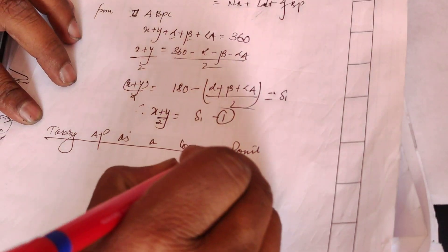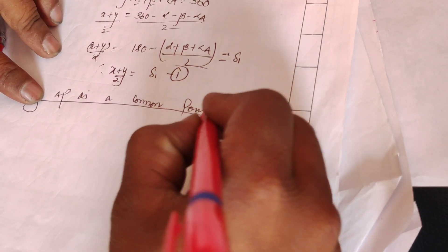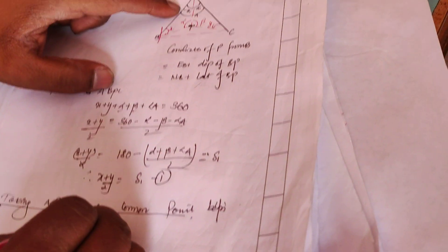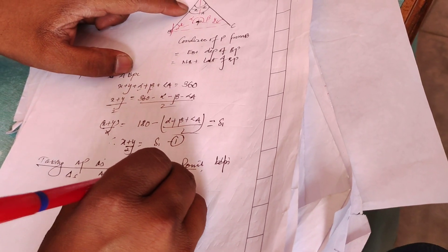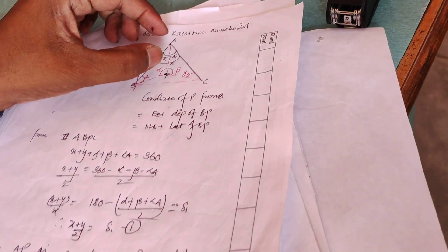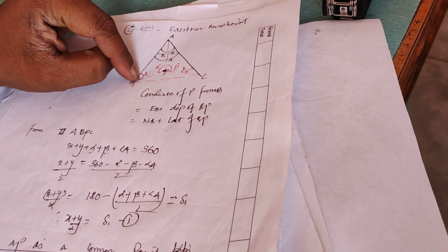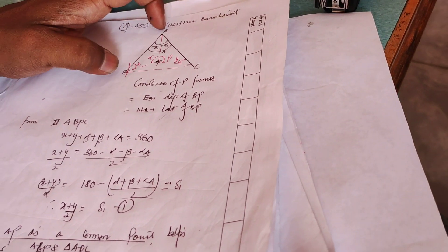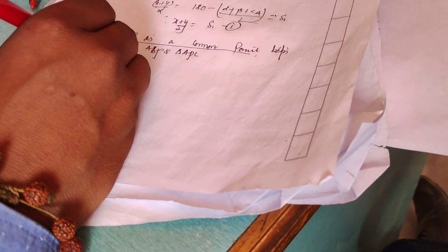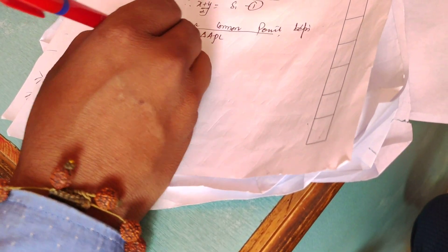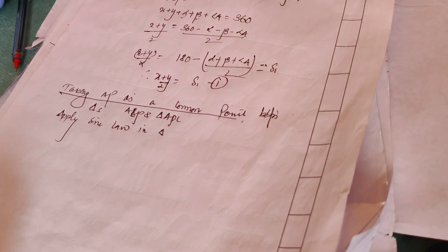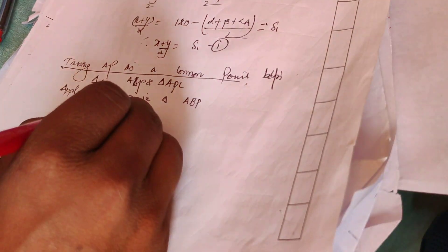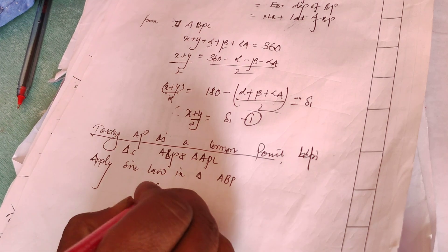Now, between which triangles? Between triangles ABP and APC. In triangle ABP, the common side is AP. We are looking at AB's length. By the sine rule: sin x divided by AP is equal to sin alpha divided by AB.